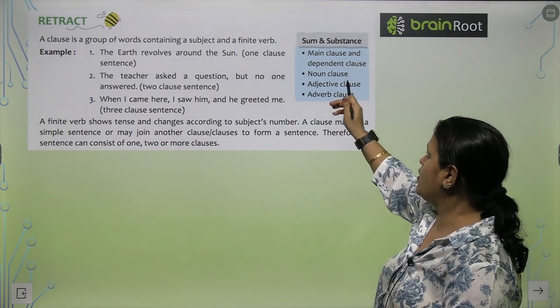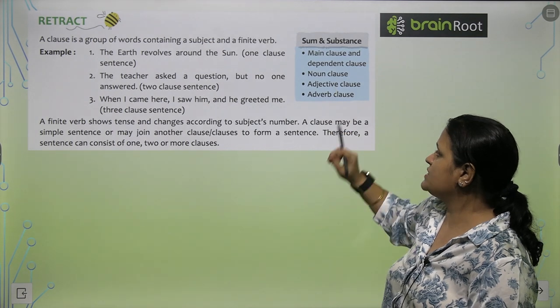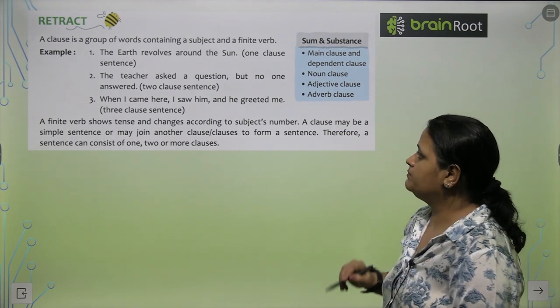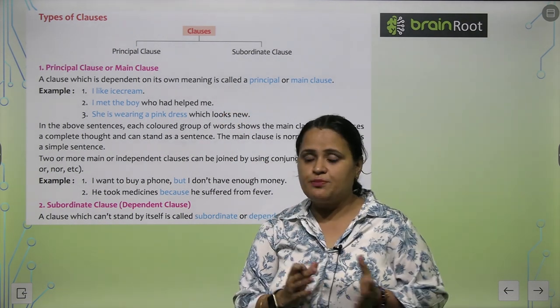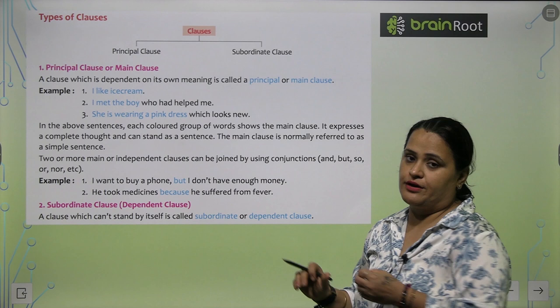Ab ham is chapter bhi parhne wale hai. Noun clause, adjective clause and adverb clause. Now, types of clauses. Clauses - principle clause and subordinate clause. So, principle clause yaa phir usse hum kehate hai main clause.